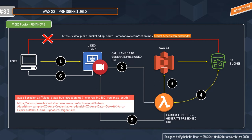So if you're a user who wants to watch a particular movie stored in an S3 bucket, you send a request and a pre-signed URL is generated so you can rent it. For example, using the CLI: `aws s3 presign s3://bucket/action.mp4 --expires-in 3600 --region ap-south-1`. This generates a pre-signed URL containing the HTTPS URL, the encryption algorithm, credentials, date timestamp, expiration time, and signature.